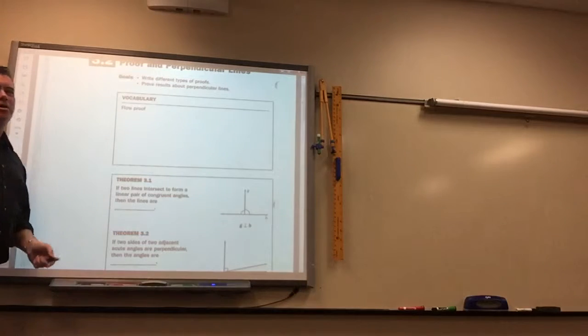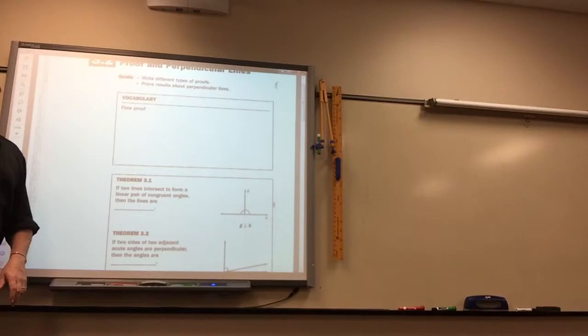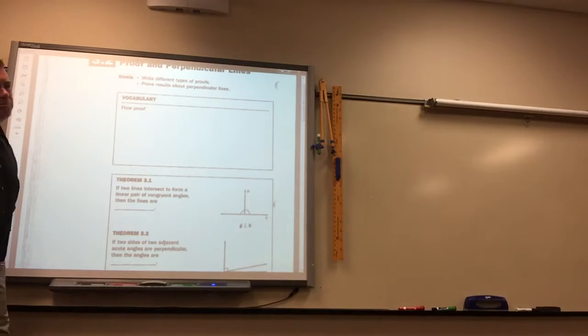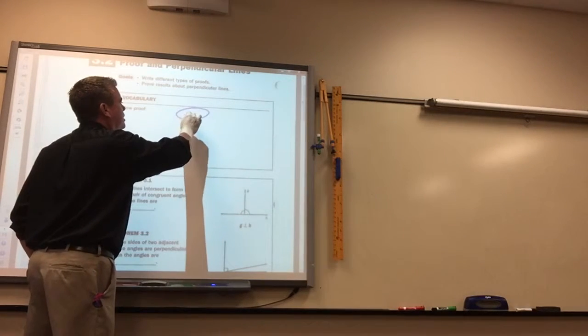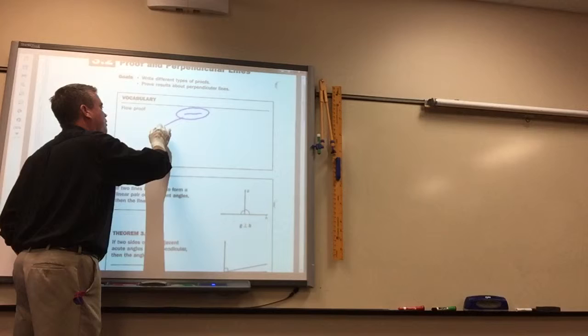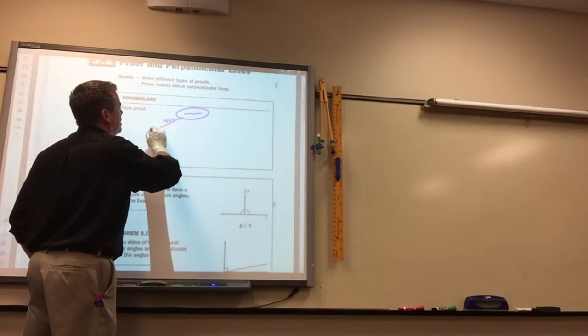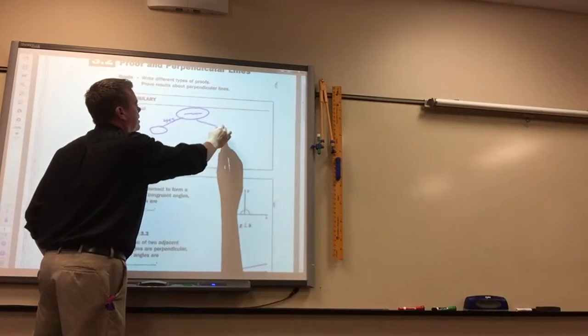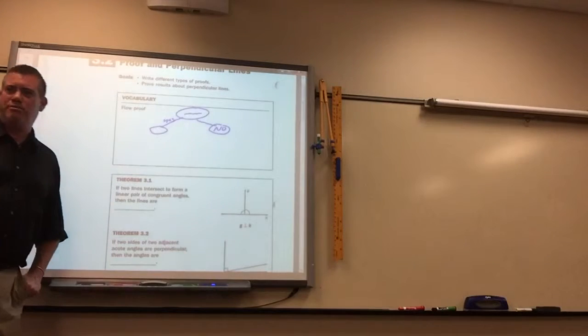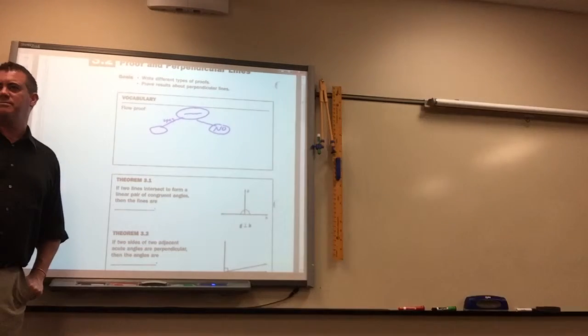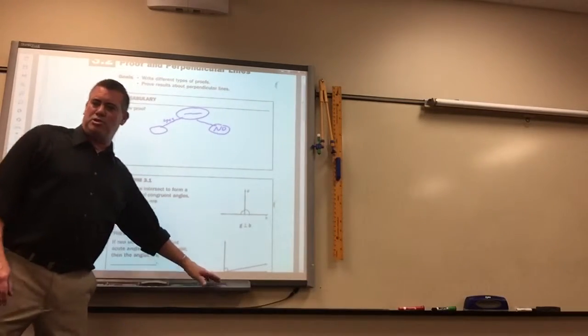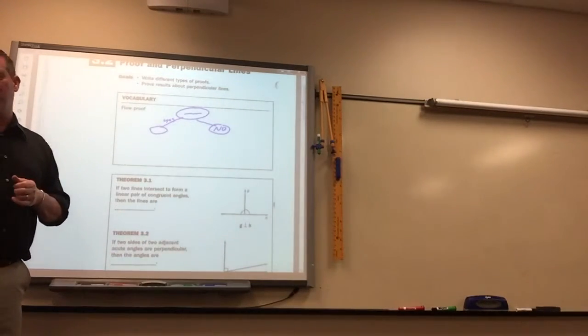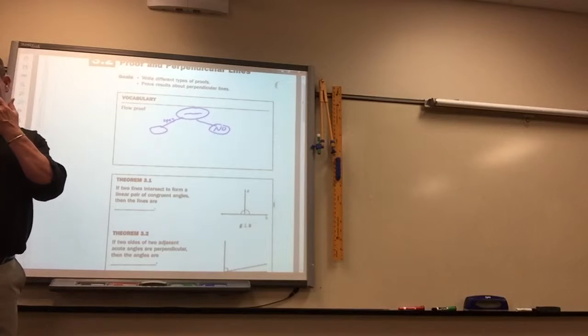They just talk about a flow proof. I showed you an example that we don't need to make any flow proofs. But a flow proof is just like a flow chart. They have something written in a circle or a rectangle, and if it's yes, you go here, and if it's no, you go there. Remember what a flow chart looks like? We don't need to make the flow charts, but there are some examples in there. You don't need that.